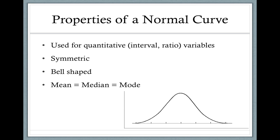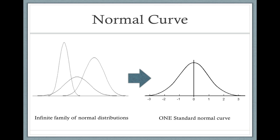This is a very important distribution because it's the model for many naturally occurring phenomena and is used a great deal in inferential statistics. A normal curve is typically defined by its mean and standard deviation, so there's an infinite family of normal distributions. We convert this infinite family of normal curves to one standard normal curve.